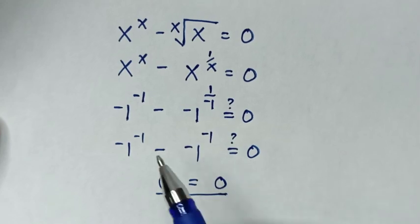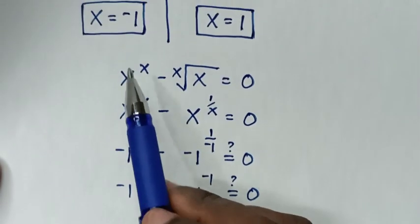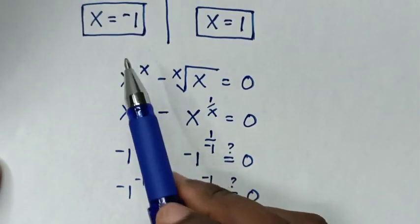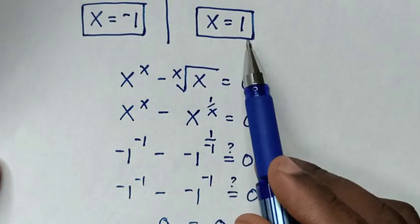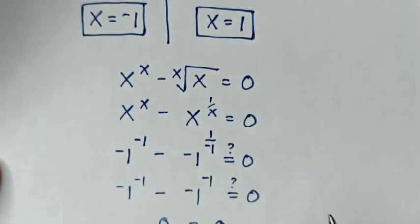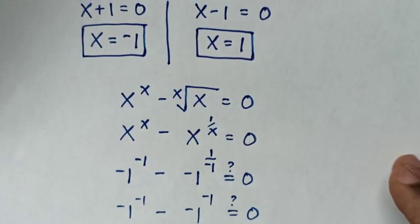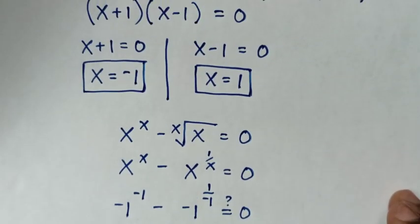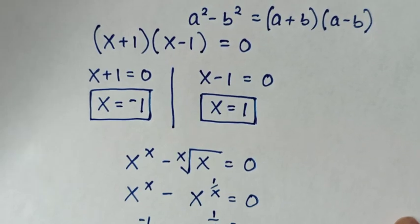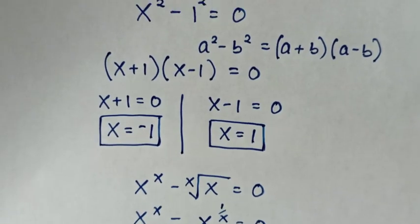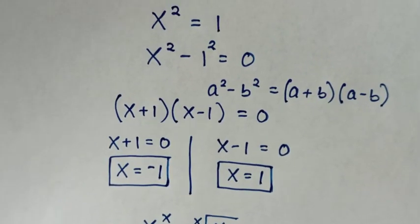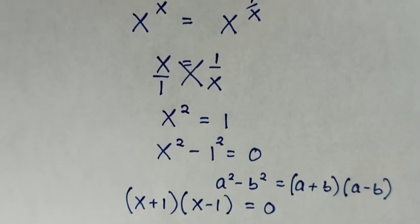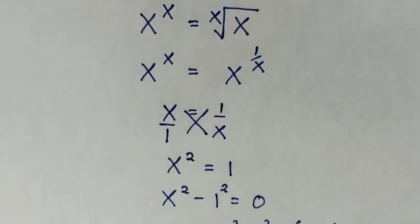So the left side and right side are equal, so it's true for the value of x is equal to negative 1 and x is equal to 1. Thank you for watching. If you want to level up in math, don't forget to show some love by hitting the like and subscribe button. Until next time, bye bye.